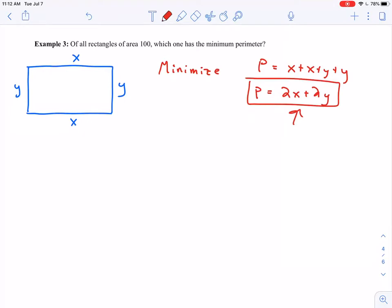This function still has two variables, though. I need a constraint to simplify this. So let's come up with a constraint here. It says, of all rectangles of area 100, I know that this rectangle that I've drawn here can't have an area of more than 100. So my constraint here is that the area has to be 100, and I know that the area is just x times y.